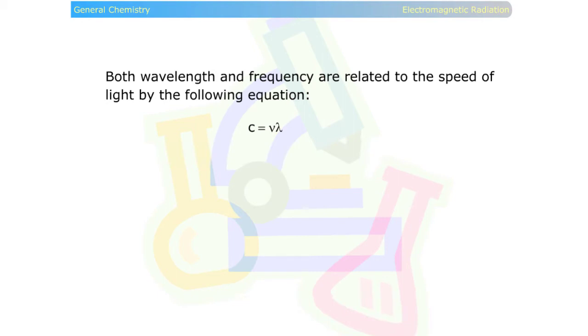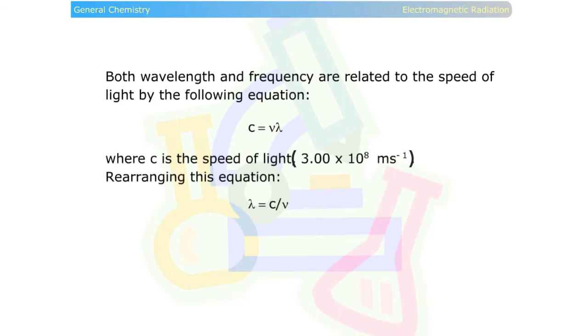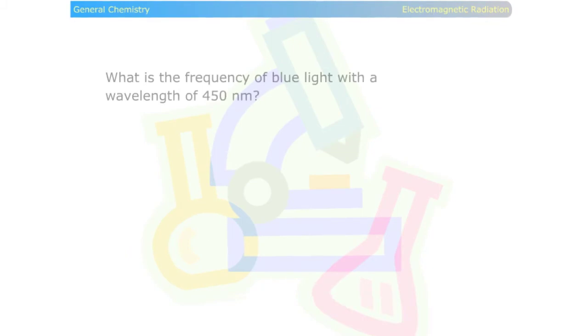Both wavelength and frequency are related to the speed of light by the following equation: c equals frequency times wavelength, where c is the speed of light. Rearranging this equation, wavelength equals the speed of light divided by frequency. As frequency gets larger, the wavelength must get smaller. They are inversely related.